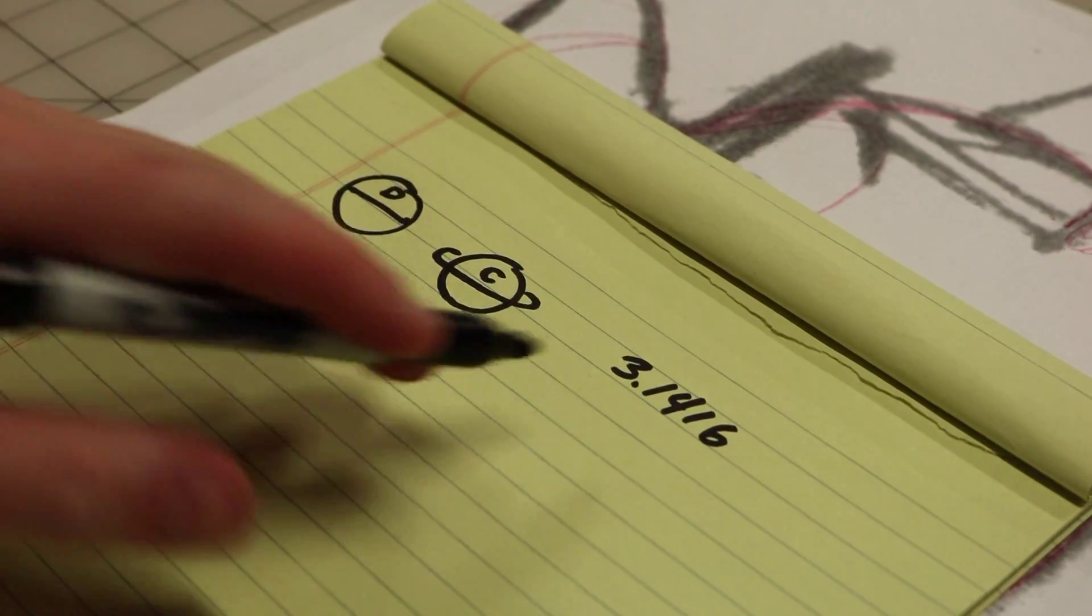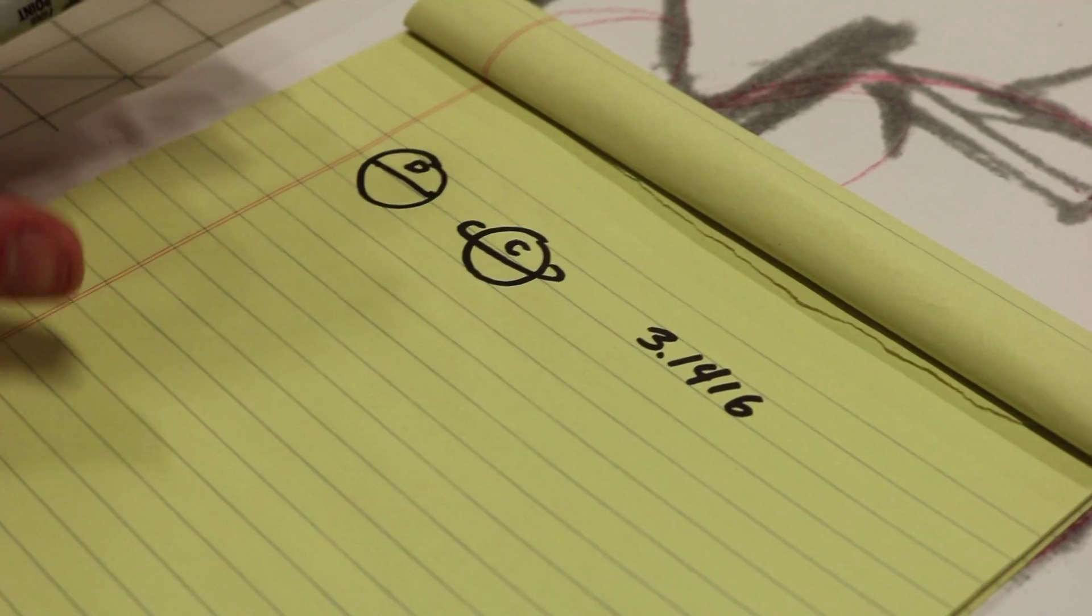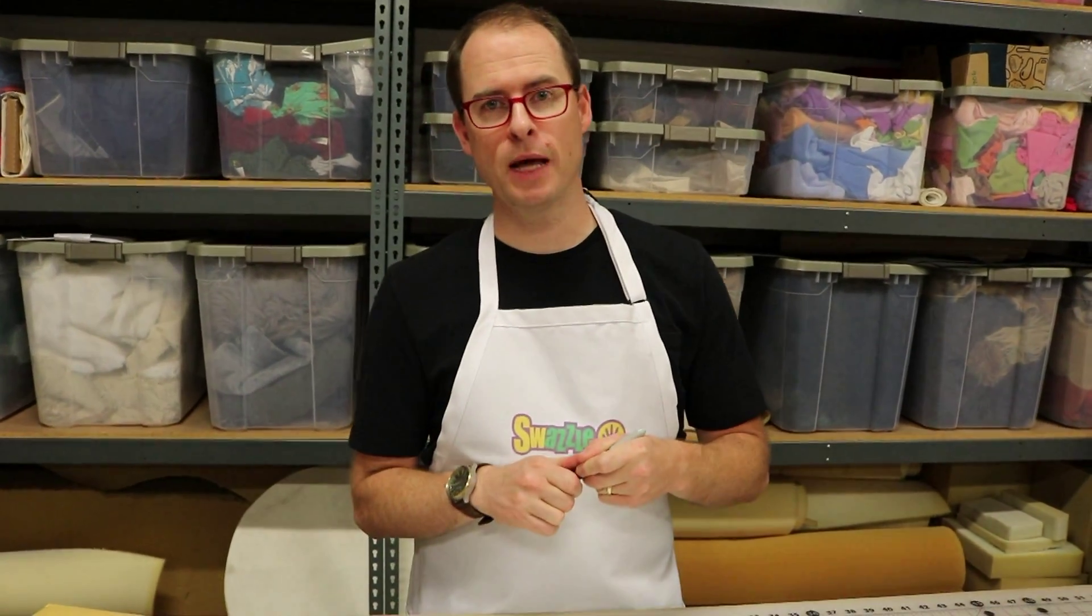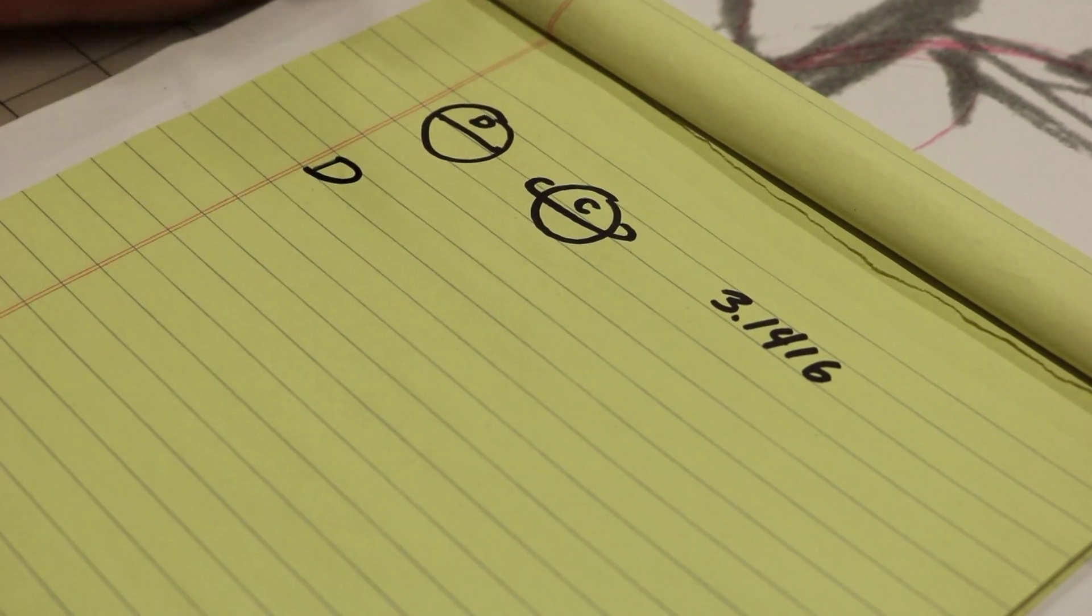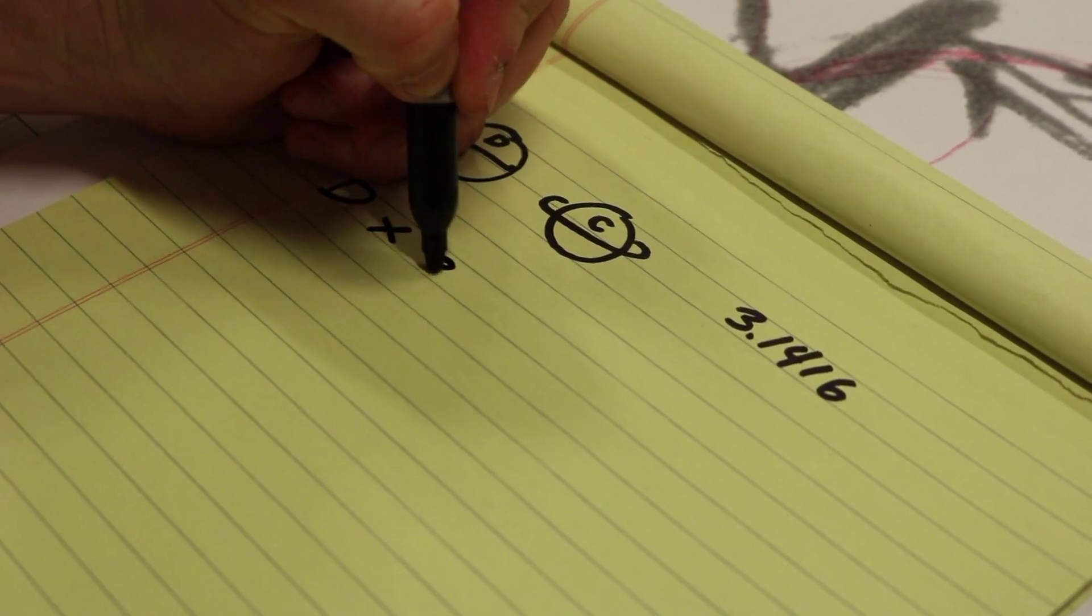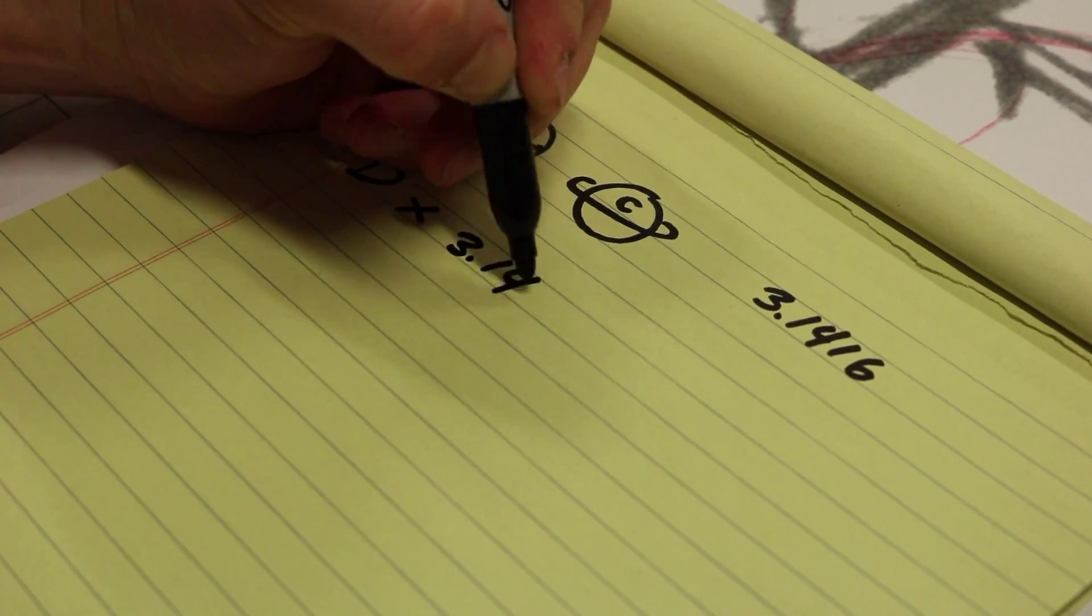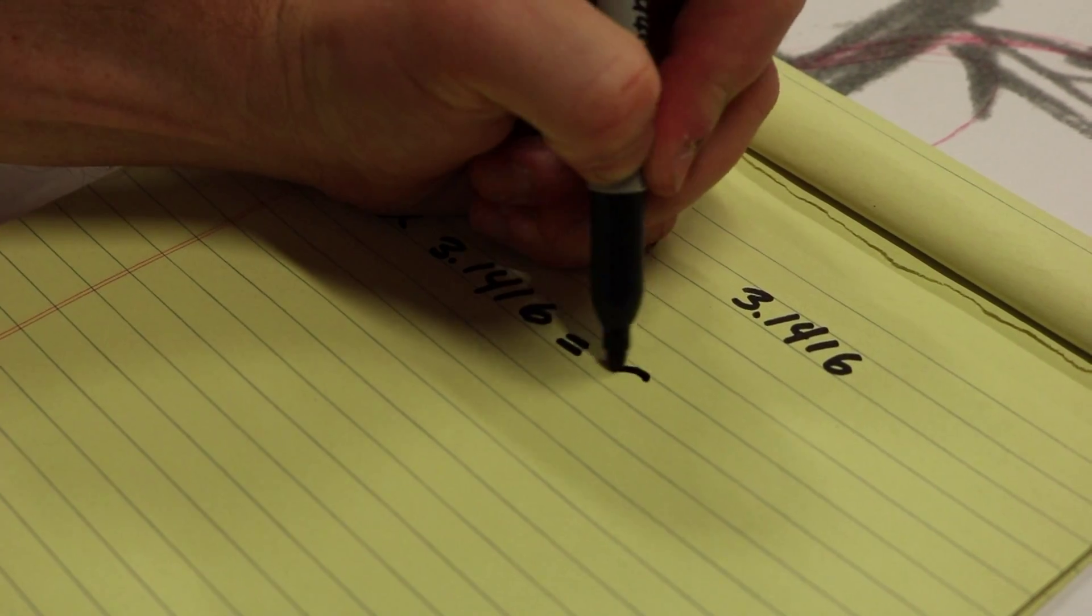What we're going to do is we're going to need to figure out what is the circumference of our circle. So here is the general equation that we are going to use. We're going to say our diameter times pi.